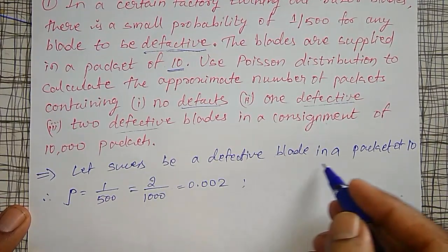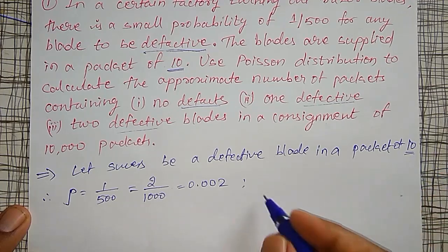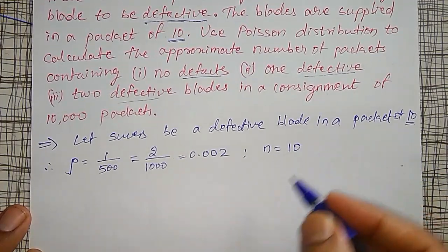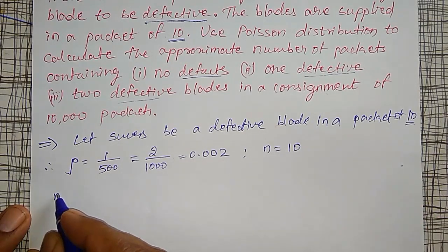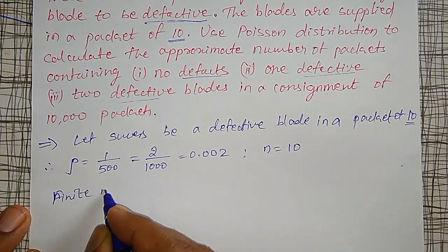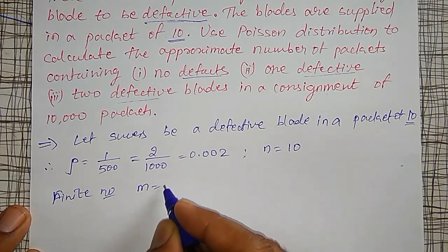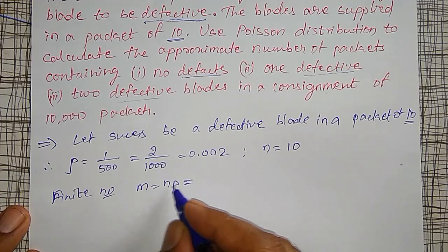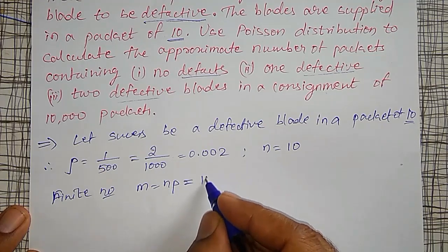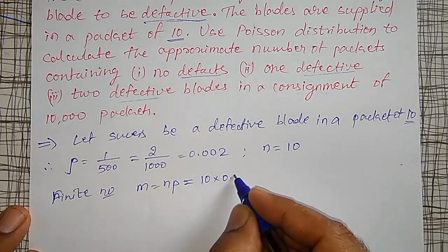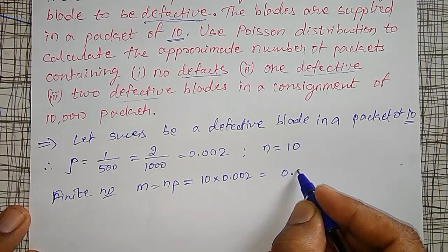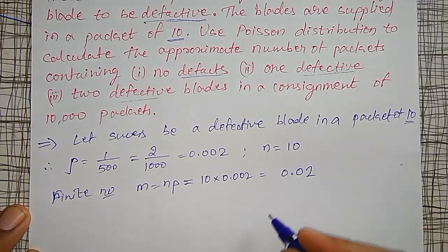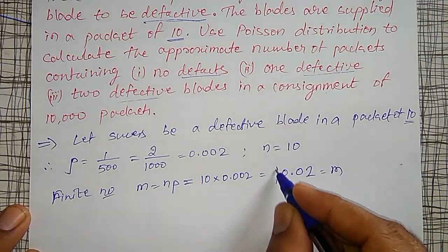The number of trials n equals the number of blades per packet, so n equals 10. Therefore the finite number m equals n times p, which is 10 times 0.002, giving m equals 0.02.